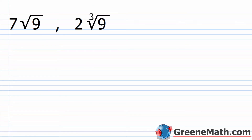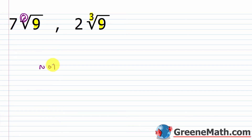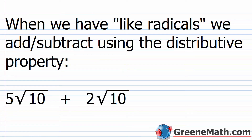What about something like 7 times the square root of 9 and 2 times the cube root of 9? These are not like radicals. Although the radicand is the same — a 9 in each case — the index here is a 3 and the index here is a 2. So the indexes are not the same in this case. These are not like radicals. Overall, it's pretty easy to understand whether you have like radicals or not.